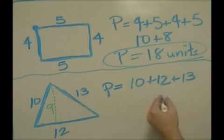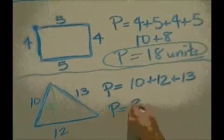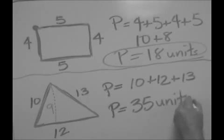So now it's time to add. Ten plus twelve plus thirteen is thirty-five. So the perimeter of this figure is thirty-five units.